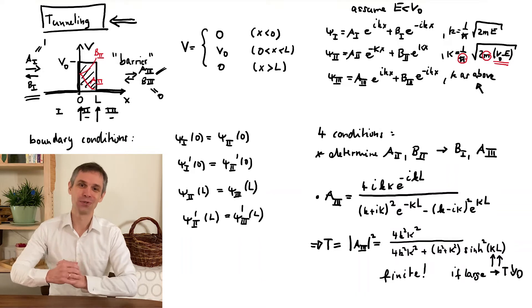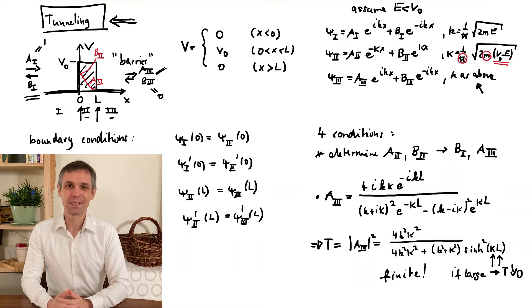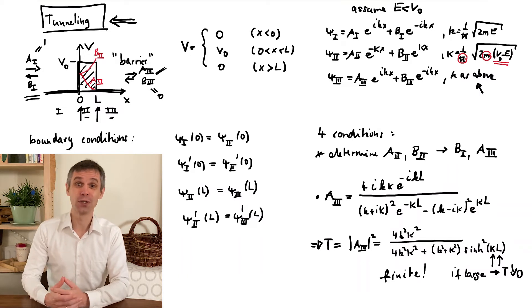So tunneling really occurs in your typical quantum system, such as for electrons moving through a semiconductor or in the context of nuclear decay.